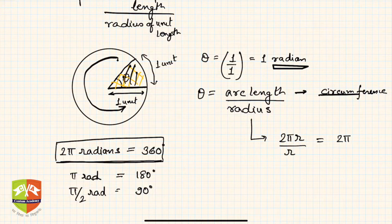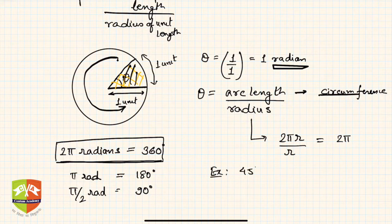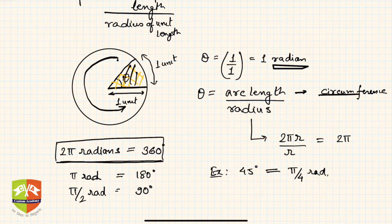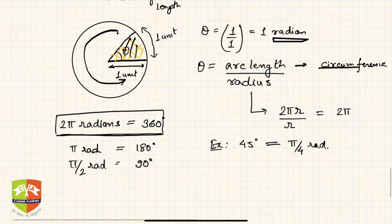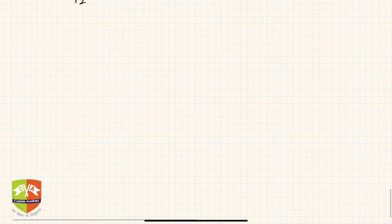Please remember this conversion. For example, 45 degrees equals π/4 radians.